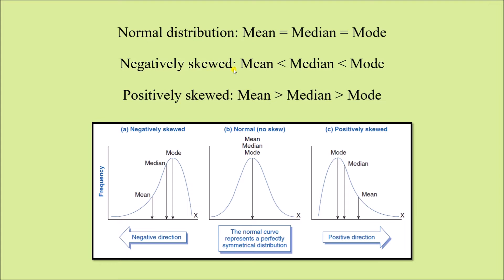In negatively skewed distribution: mean is less than median, and median is less than mode — mode is the highest value. It is the reverse in positively skewed or right-skewed distribution: mode is on the leftmost part so it is the least value, and mean is the highest because it is on the right-hand side. So mean is greater than median, and median is greater than mode. Always remember this order, as it is a very commonly asked MCQ in entrance exams.